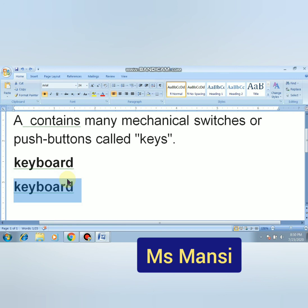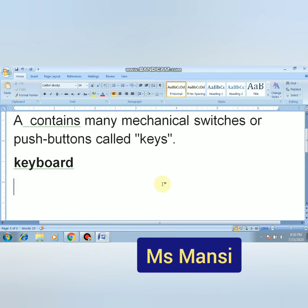I will press the Redo button. Now look — the last undo action is reversed: 'keyboard' is removed from the document area again. This is how to perform Undo and Redo in Microsoft Word.